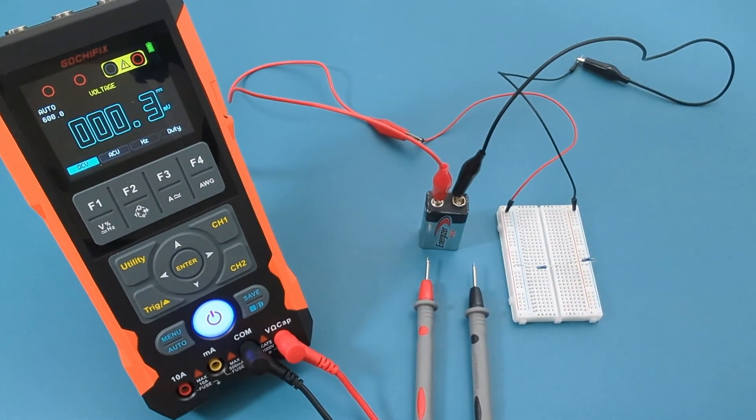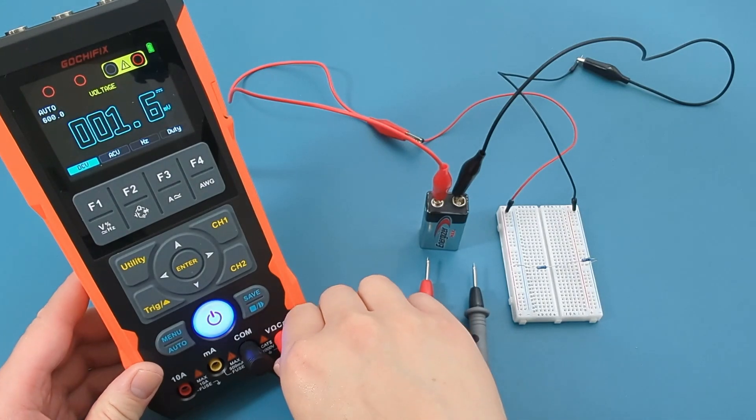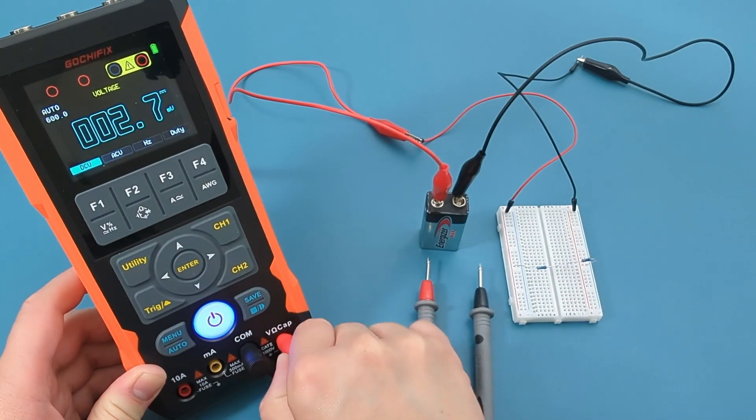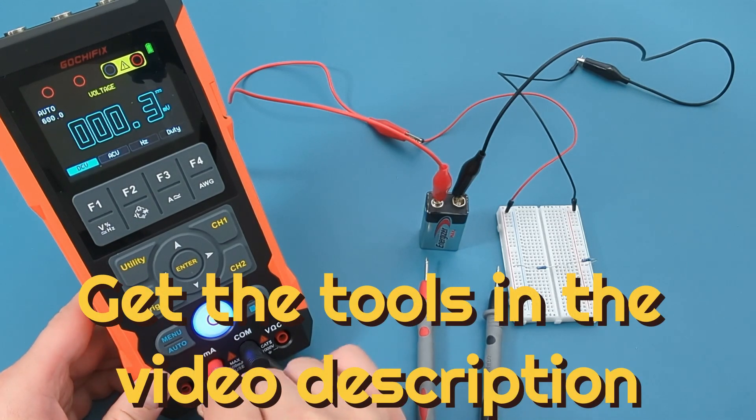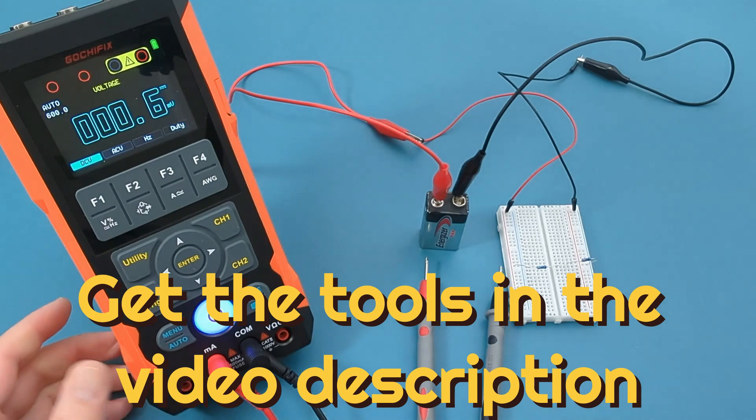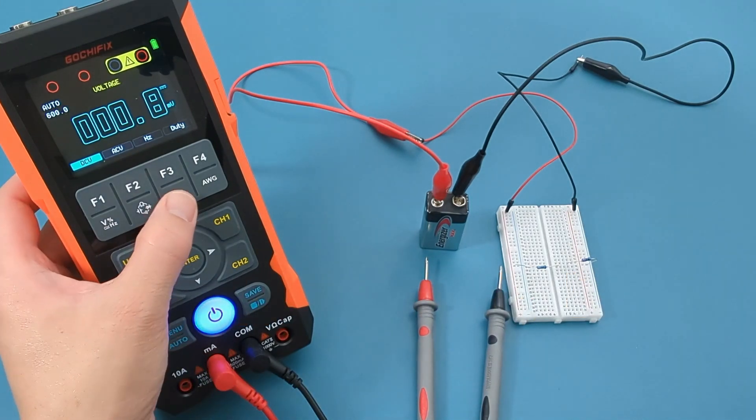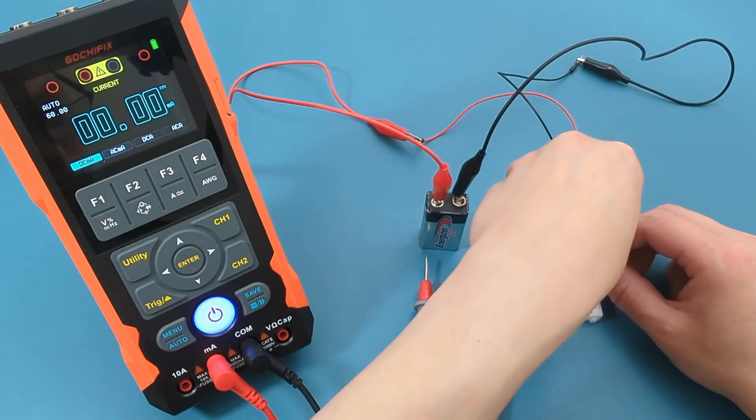The last demonstration is to check the current flowing in the circuit. On the multimeter, move the red probe from the voltage port to the milliamp port. Change the setting from checking voltage to current. Move R2 to a different row in the breadboard. We're going to be checking the current in series.